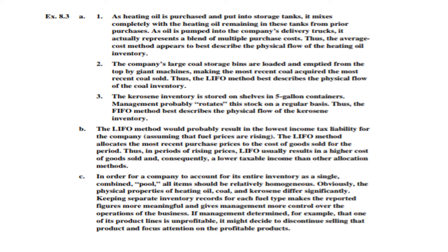For a company to account for its entire inventory as a single combined pool, all items should be relatively homogeneous. The physical properties of heating oil, coal, and kerosene differ significantly, so keeping separate inventory records for each fuel type makes reporting figures more meaningful and gives management better control. If one product line is unprofitable, management can decide to discontinue it and focus on profitable products.